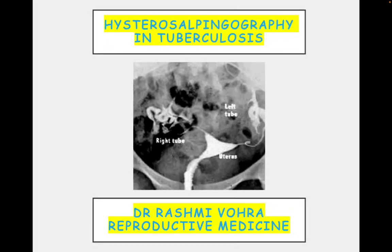In this video we will discuss HSG (hysterosalpingography) in patients with tuberculosis. Ideally we should not perform HSG in TB patients, but sometimes we end up doing HSGs and later finding it to be a uterus affected by tuberculosis. It can manifest as adenexal tuberculosis involving the fallopian tubes, endometrial tuberculosis, or very rarely cervical or vulvovaginal tuberculosis.